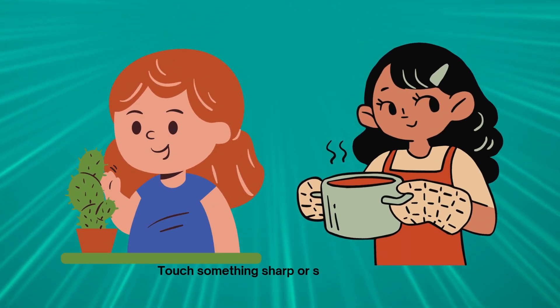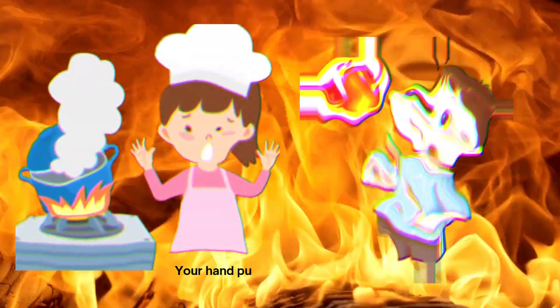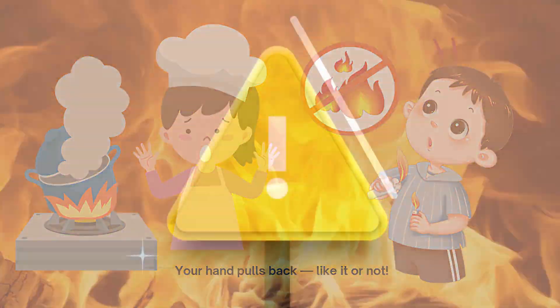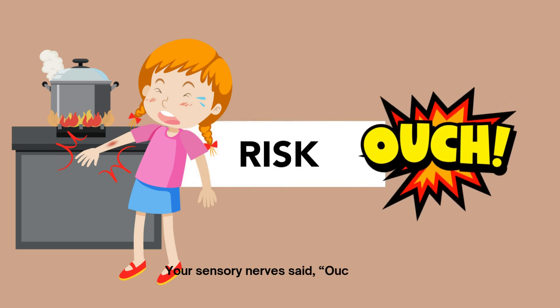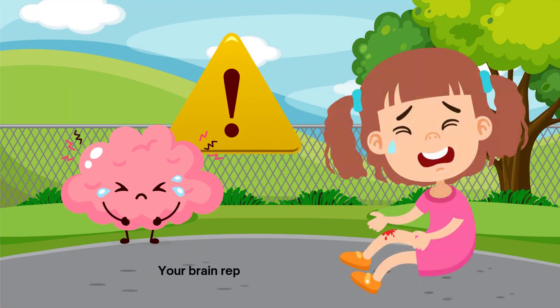Touch something sharp or something hot, your hand pulls back, like it or not. Your sensory nerves say, ouch, alert. Your brain replies, let's dodge that hurt.